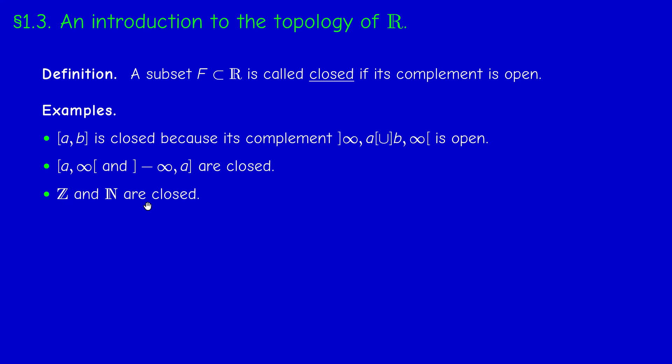Now Z and N are closed. Why? Because we proved in the last video that the complement of Z is open, and we indicated the proof why the complement of N is also open. So all these sets are open. But N and Z are not intervals. So every closed interval is closed, but the converse is not true. There are closed sets which are not intervals.